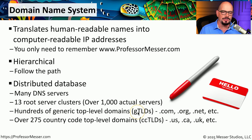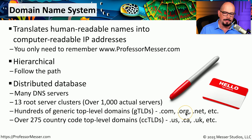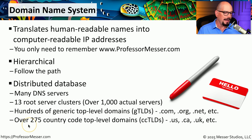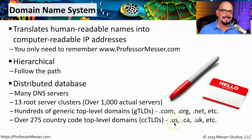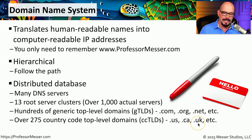These generic top-level domains, or GTLDs, are the ones you might recognize: .com, .org, .net, and so on. You might also see these top-level domains separated by country — there are about 275 country codes. For example, the United States is the .us domain, Canada is .ca, the United Kingdom is .uk, and so on.